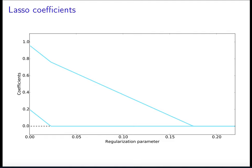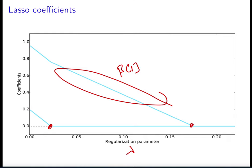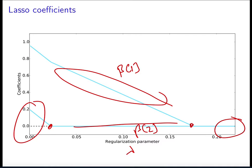When the regularization parameter lambda is in this range, the first coefficient beta one will be non-zero and the second coefficient beta two will be zero. If you remember, this is exactly what we saw when we applied the lasso on real data — coefficients appearing at some point as lambda varies. When lambda is very large, the solution is just the zero vector; when lambda is very small, we get the OLS estimates. But in between, there's a sweet spot where we get sparse coefficient estimates. Here we have a very simplified model and we're going to prove that is actually the case.